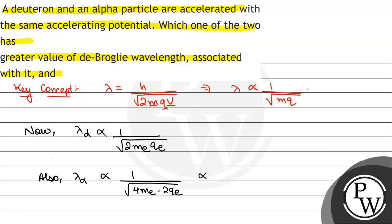So, this is equal to 1 by root under 8 mass of electron charge of electron.